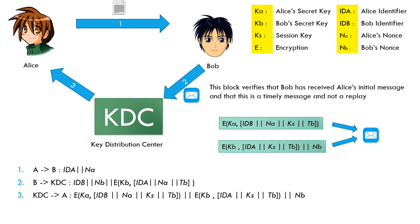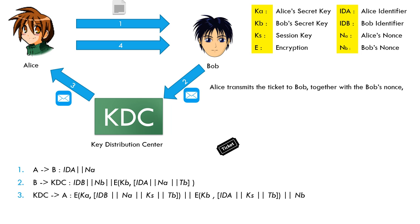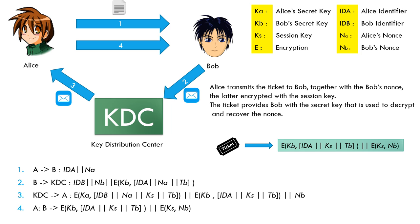Alice transmits the ticket to Bob, together with Bob's nonce. The latter are encrypted with the session key. The ticket provides Bob with the secret key that is used to decrypt and recover the nonce.